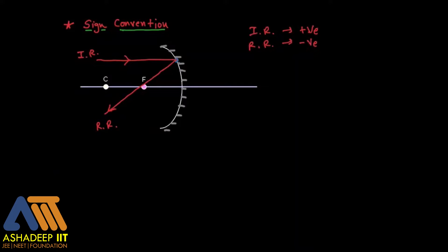Another thing is this is our principal axis. Let us say the object is AB on the principal axis. The height from A to B is in the upper part of the principal axis, and just because it is in the upper part, it will be taken as positive.